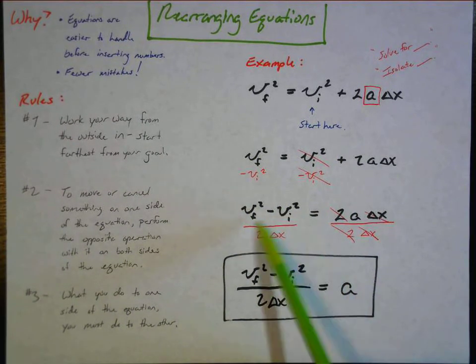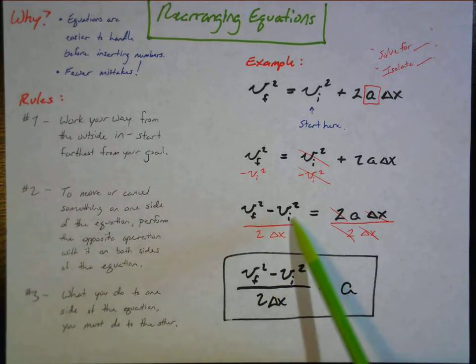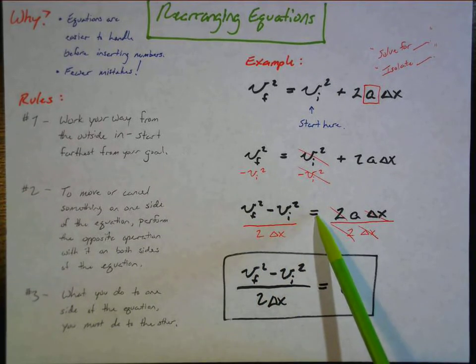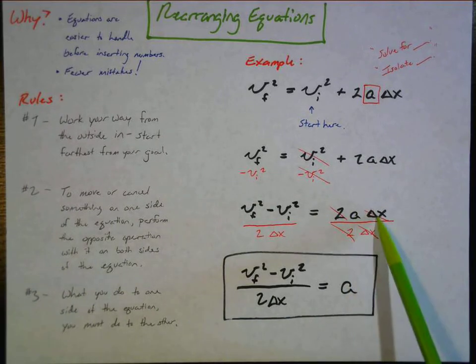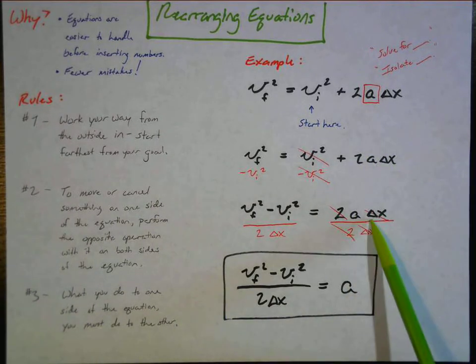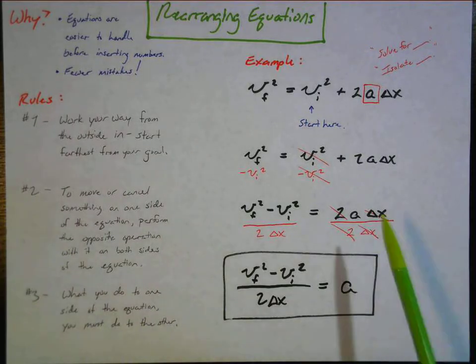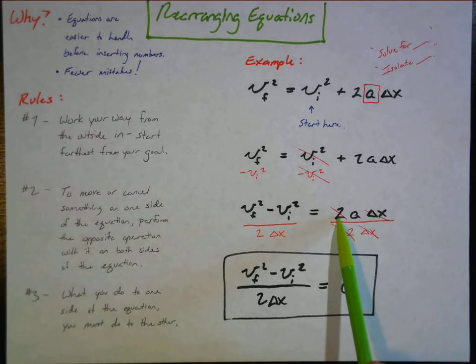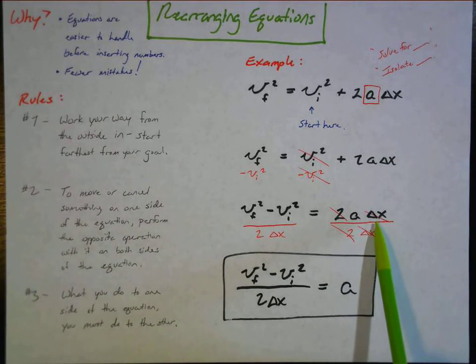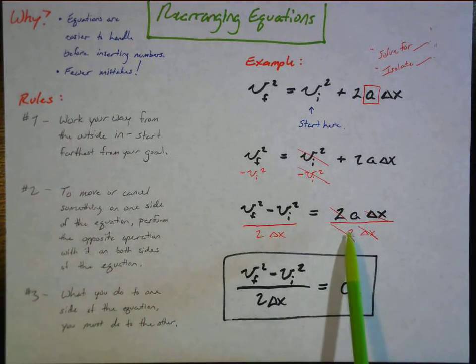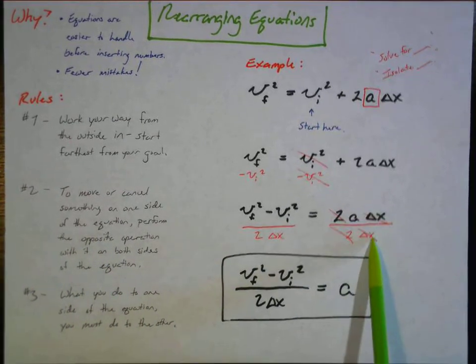And then we end up with final velocity squared minus initial velocity squared equals, and over here it canceled out so we're left with two times acceleration times displacement. We're left with just that. And next what we're going to need to do is undo multiplying by two and undo multiplying by displacement. And so to undo multiplication, well you perform the opposite operation on both sides.